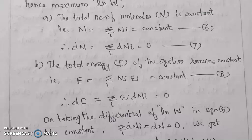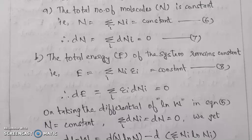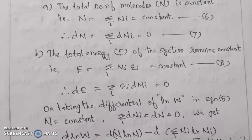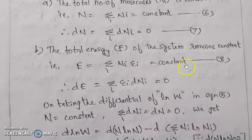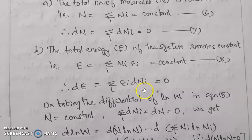The total energy of the system is also constant. E equals sigma i Ni epsilon i equals constant. That is equation 8. Differentiating: sigma i epsilon i dNi equals 0. That is equation 9. We will take the differential of ln W in equation 5.